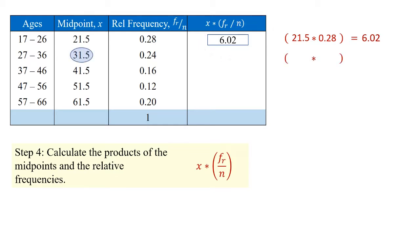The next cell, these are the ages 27 to 36, midpoint value of 31.5, we multiply it 31.5 times 0.24, and this gives us a total of 7.56.